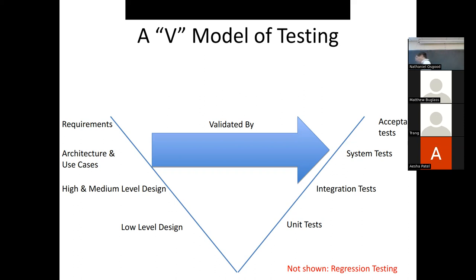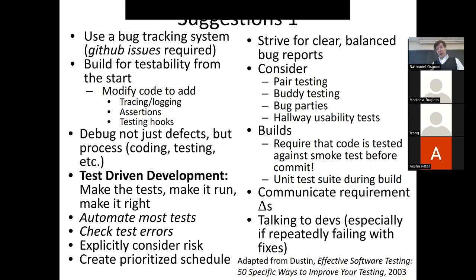System tests test broader functionality — whole use cases or user stories, steps a user might go through that are meaningful at the user level, involving all sorts of function calls and classes playing together. For example, open a document, print it, edit it, print it again, and close it. Acceptance tests are system tests at the highest level that verify key functionality.